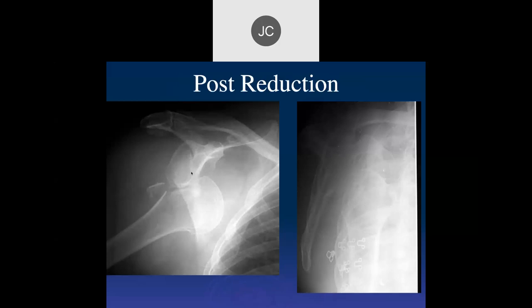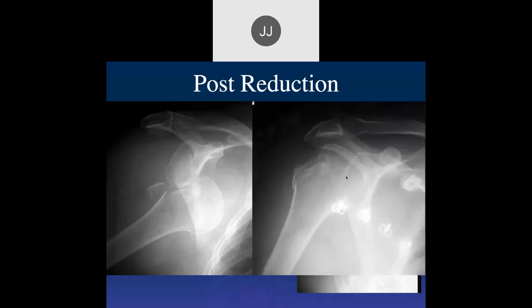Traumatic events with significant falls usually do not relocate on their own. Chronic recurrent dislocations — patients can put them back themselves. But in acute situations with significant trauma, they don't go back; they have to be reduced.